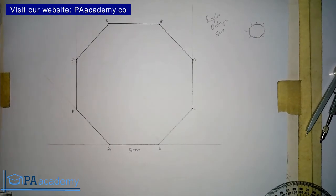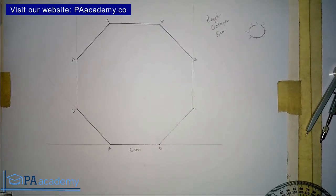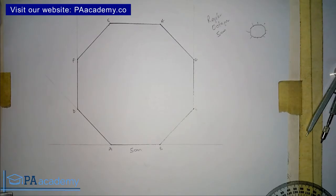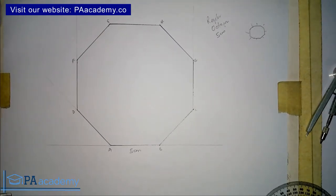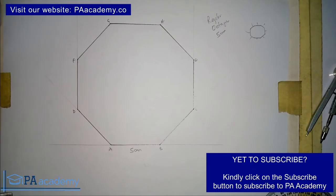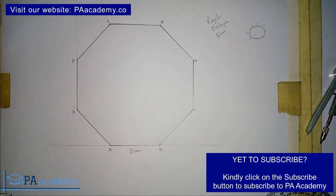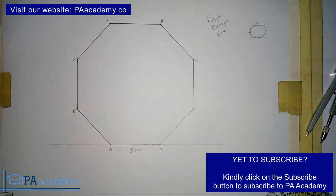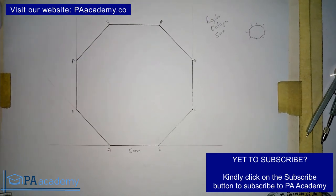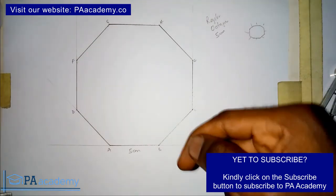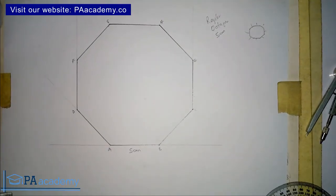That is it on this video on how to draw a regular polygon given the length of one of the sides. Check the description of this video for links on how to draw other regular polygons — the pentagon, hexagon, and others. If you have any questions, comments, or video requests, leave them in the comment section below. Check out our playlist on technical drawing and our website paacademy.co. Please click the subscribe button and the bell icon so that you get notified when I release new videos. Thank you very much, and I will see you in another video.